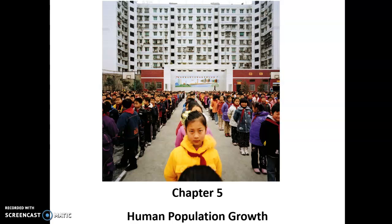For example, in the United States we have very high resource use — so many cars, with each family having a car, sometimes more than one car per household. That type of consumption, compounded with a large population size, isn't sustainable.